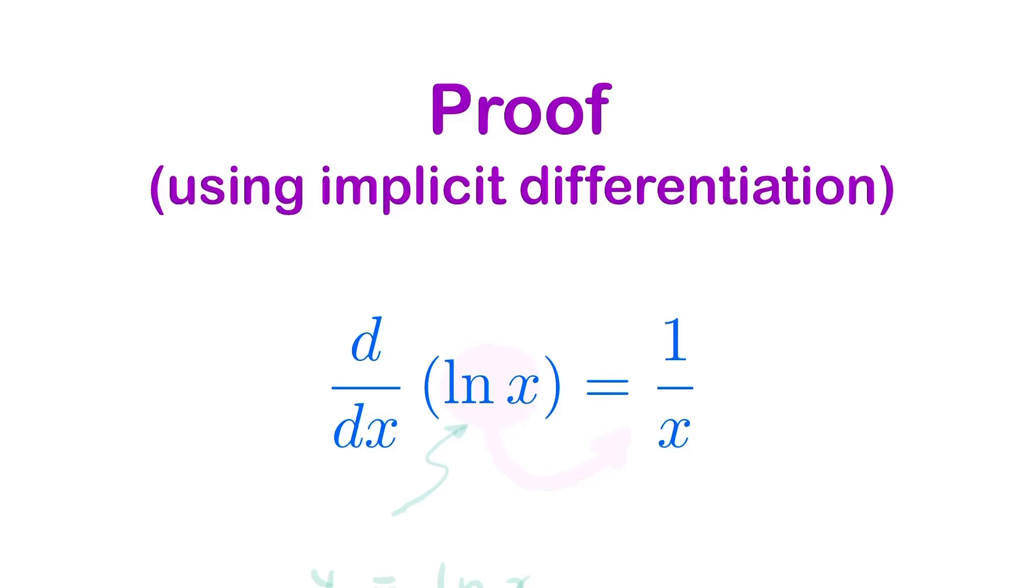The derivative of natural log is 1 over x. But how to prove that? How can we prove that the derivative of the natural log is 1 over x? I'm going to do this by implicit differentiation.